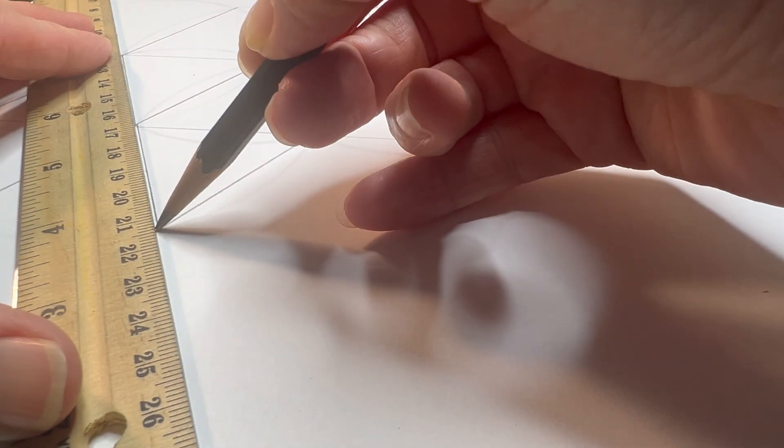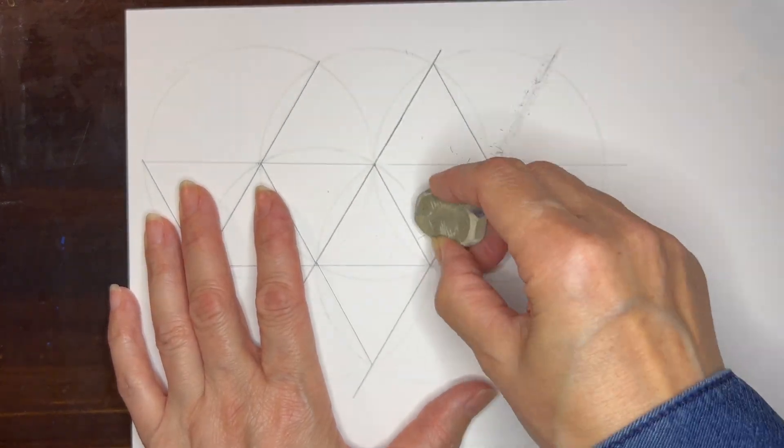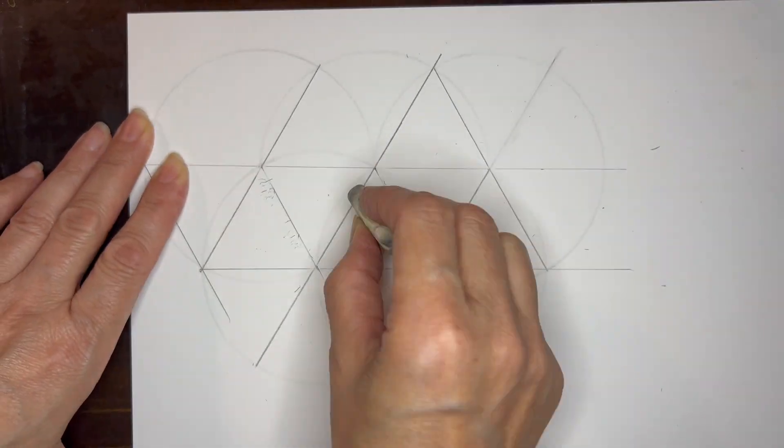I'm adding in the last couple of triangles here and erasing all of the extra arcs as they are not necessary.